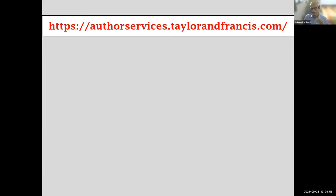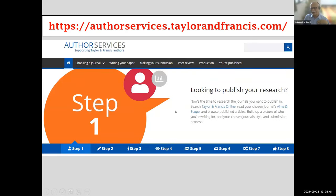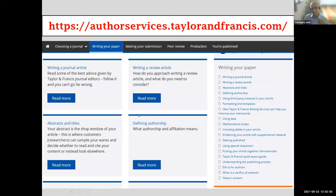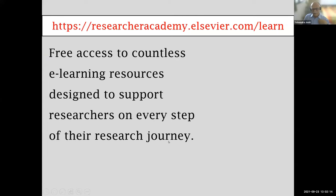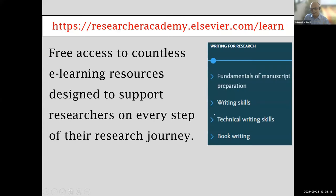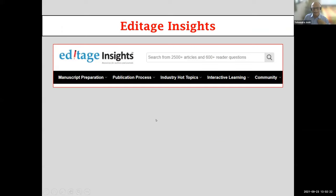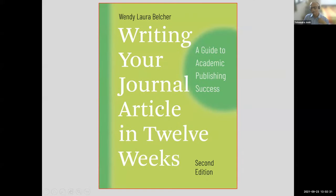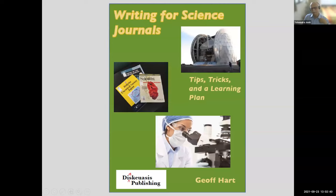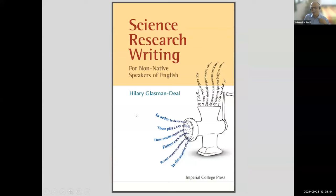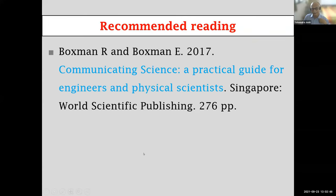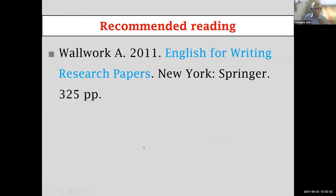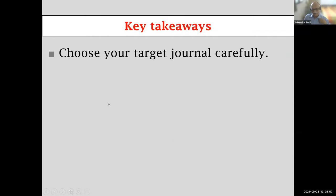Many publishers offer good advice on all aspects of publishing. Taylor and Francis has an extensive website; Springer has Springer Academy; Elsevier has its Research Academy covering writing skills, technical writing, and book writing; Editage offers information on how to write a research paper; Wiley has Author Services. I also want to recommend some useful books — I have selected the most useful from hundreds and provided their bibliographic details so your library can order them.